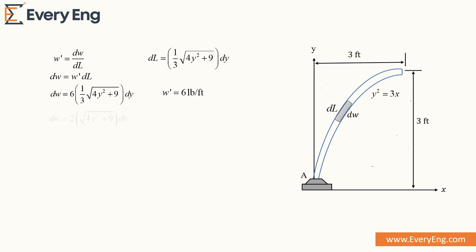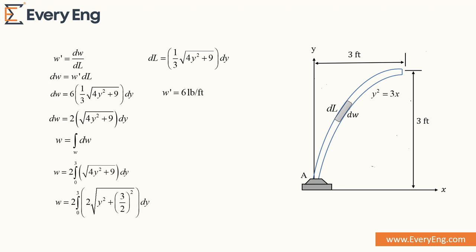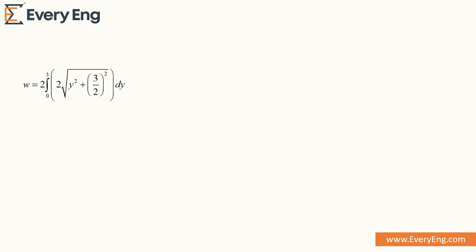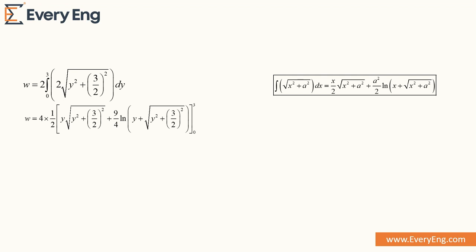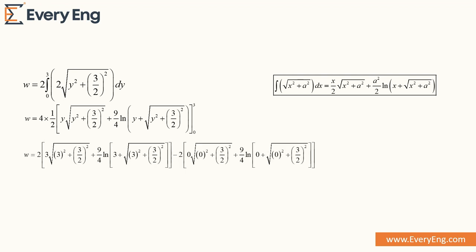Now we simplify this equation. To find out the weight of the uniform rod, we integrate from 0 to 3 feet. We solve this integration using a standard formula. After putting in the lower and upper limits, the weight of the uniform rod is 26.62 pounds. This is the weight of the uniform rod bent into the shape of a parabola.